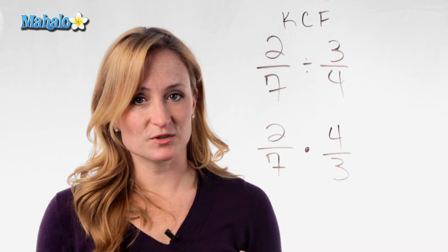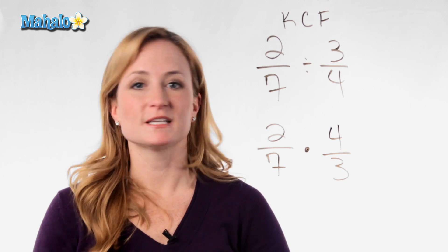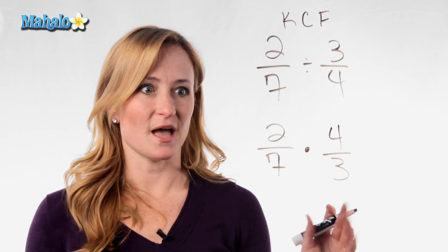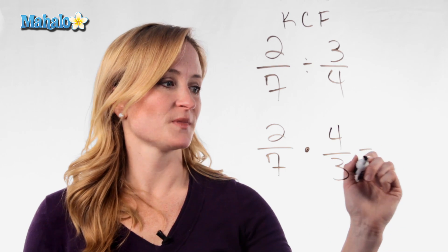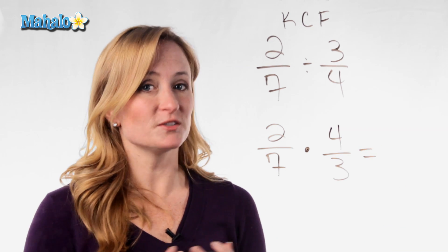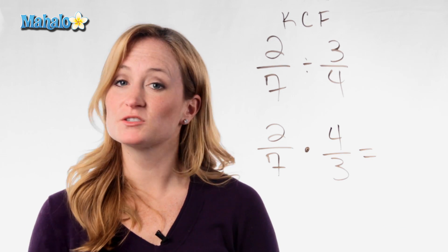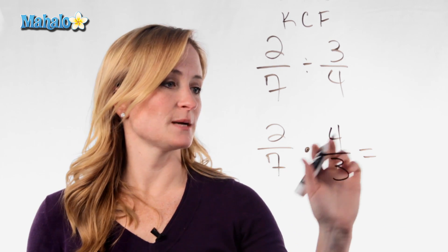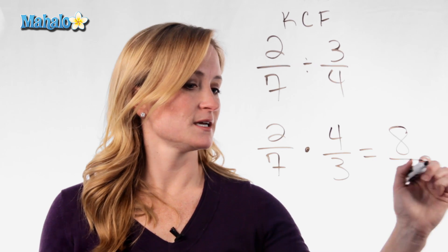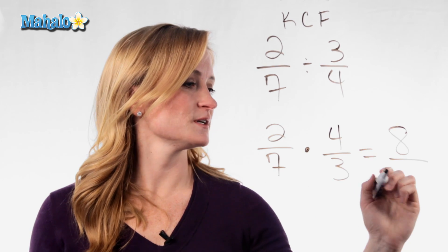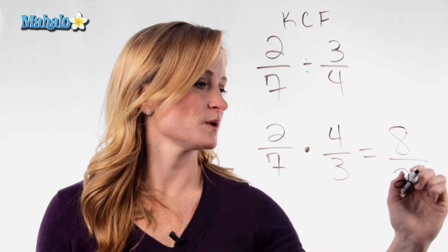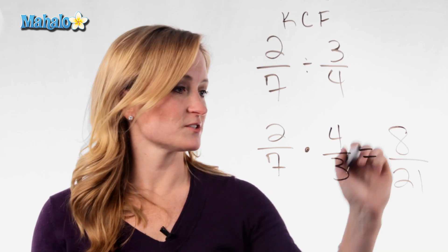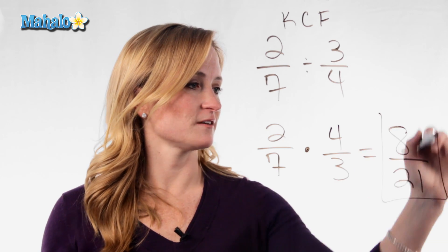So any time you're dividing fractions, you're just going to turn it into a multiplication problem and then it's simple. Because when multiplying fractions, you just multiply straight across. 2 times 4 is 8 and 7 times 3 is 21. And you can't reduce that fraction, so there's your final answer.